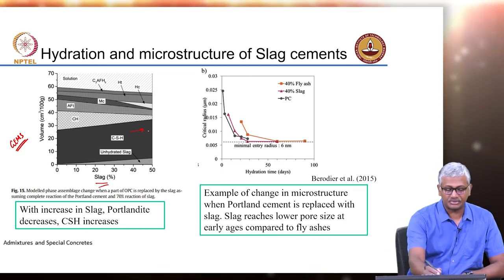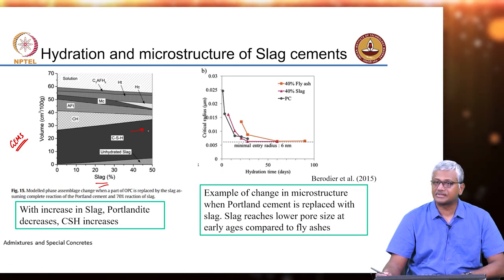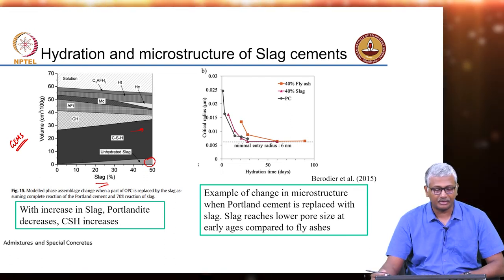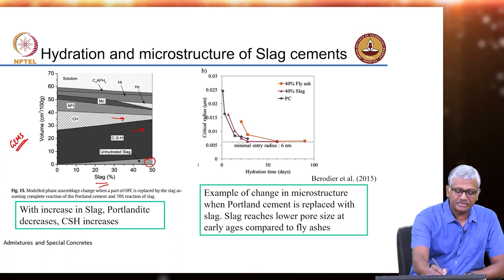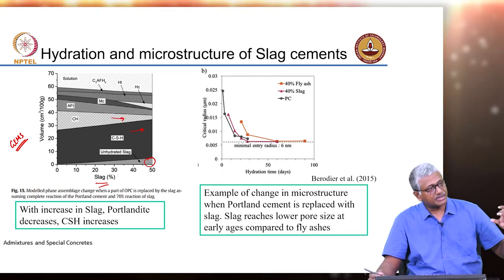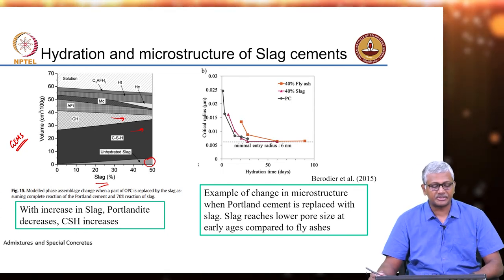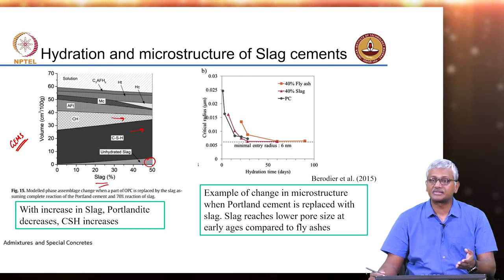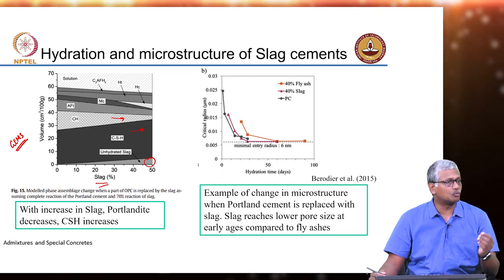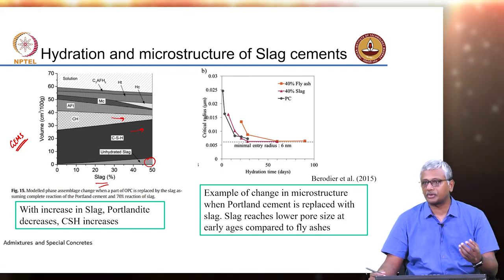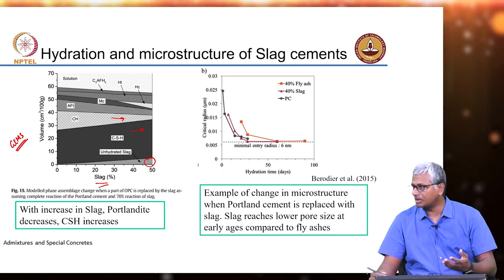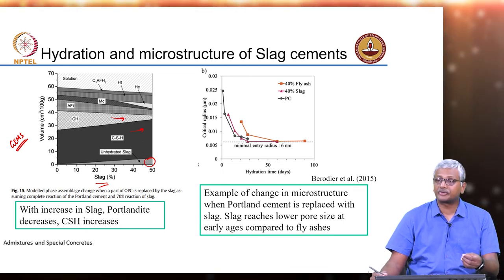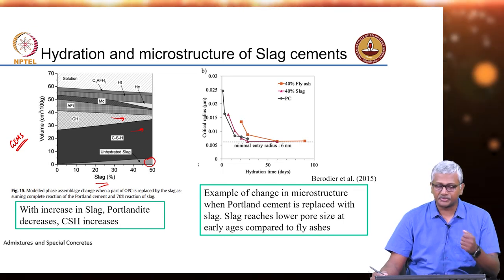With increase in slag content, the formation of CSH is going up. But because a lot of slag is not going to react, there will still be very high amounts of unreacted slag when you have a greater amount of slag in your mix. You consume calcium hydroxide to some extent and you see that its content is continuously reducing as you go to higher slag replacements. But very often in actual experimental evidence — this being a thermodynamic model — if equilibrium is attained, what is the potential for product formation? In reality, all this may not actually happen. Your unreacted slag may be much more than predicted, and your calcium hydroxide depletion may be much less as compared to what the thermodynamic model predicts.